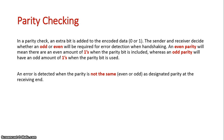An even parity is when there's an even amount of ones in the data packet, and an odd parity is when there's an odd amount of ones in the data packet. During handshaking, it is agreed between the two devices whether there will be an odd or even parity. An error is detected when the parity is not the same as the designated parity at the receiving end.